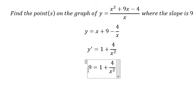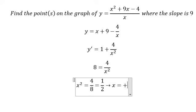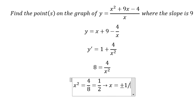Move 1 to the left, so we get 8. Move 8 to the right and x squared to the left. We get x squared equals 4 over 8 equals 1 over 2, and x equals positive and negative 1 over the square root of 2.